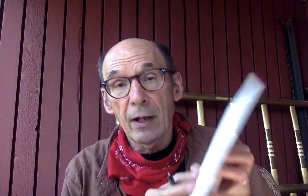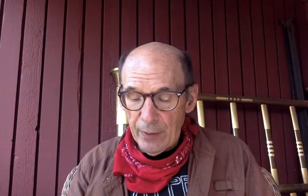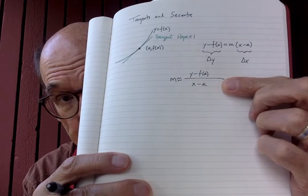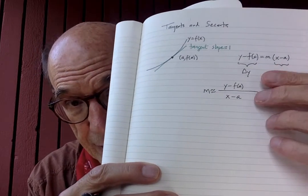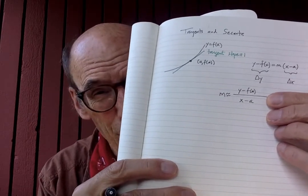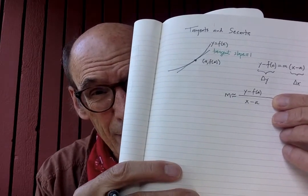This should remind you of something. If I rearrange the equation, I'm saying m is approximately a fraction — the top is y minus f of a, and the bottom is x minus a — and that's something you've seen before: that is the average rate of change. So this is all getting tied up with rates of change and secants and the like. Tangent is kind of a special secant — I'll get fired if you tell anybody I said that — but it's a special secant.